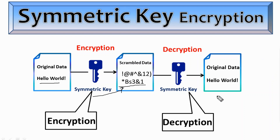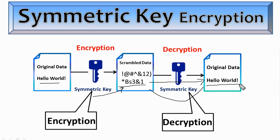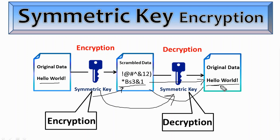The third step is decryption. The encrypted ciphertext is transferred to the receiver to decrypt the message and retrieve the original plain text. The receiver uses the same symmetric key that was used for encryption. This decryption process involves applying the symmetric decryption algorithm to the ciphertext and symmetric key, which results in the original plain text message. This is how the symmetric key works.